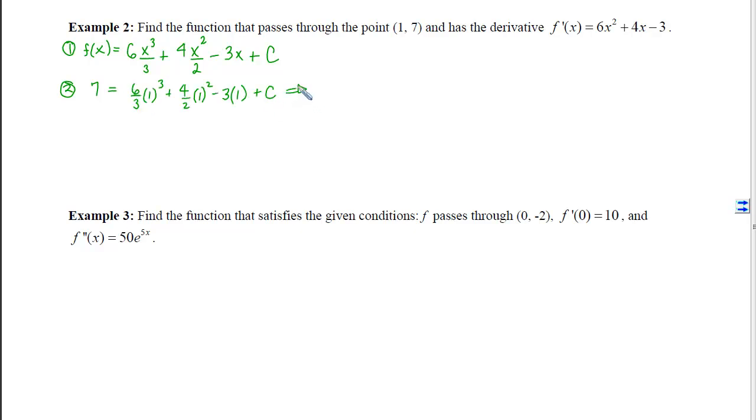So if I simplify, I will get 7 = 2 + 2 - 3 + C. I can solve for that constant c and get 4 - 3 is 1, move the 1 to the other side, and I will get C = 6.